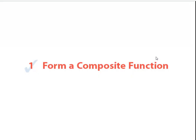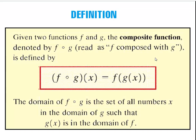Let's talk about how we would form a composite function. The book gives a definition involving two functions, f and g. We can build the composite function f composed with g. There are two different notations — we can use the circle notation to represent composition. Procedurally, we take the g of x function and it gets plugged into the f function.